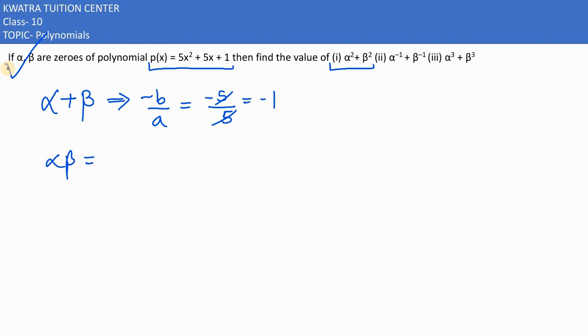Now, alpha dot beta also can be removed, which is nothing but c by a. c value is 1 and a value is 5.